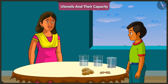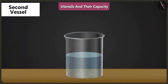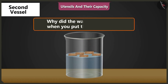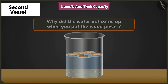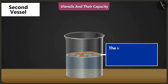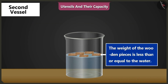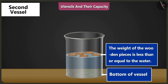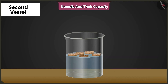Well said, Mishtu. Now put these pieces of wood in another vessel half filled with water. Why did the water not come up when we dropped in the wooden pieces? Because the weight of these pieces of wood is less than or equal to the weight of water in the vessel, so these pieces did not sink to the bottom of the vessel. This is why the water did not come up.